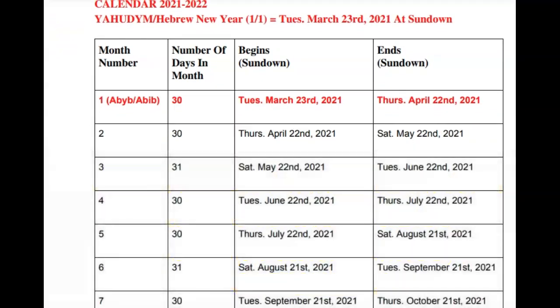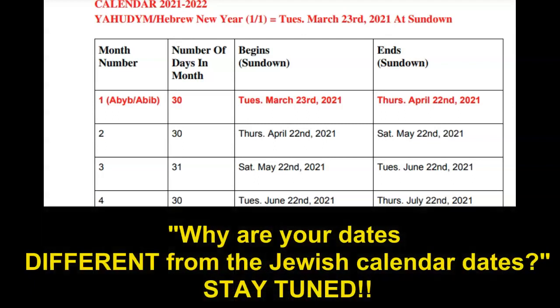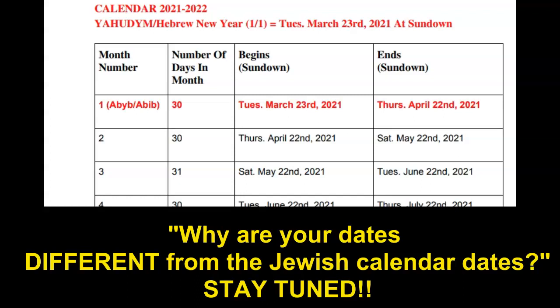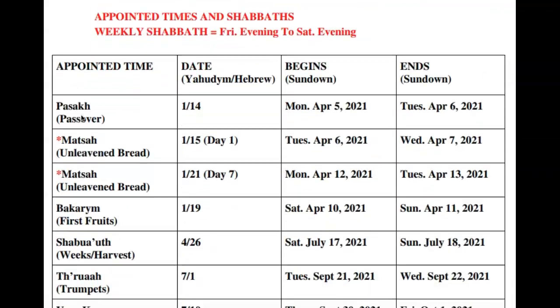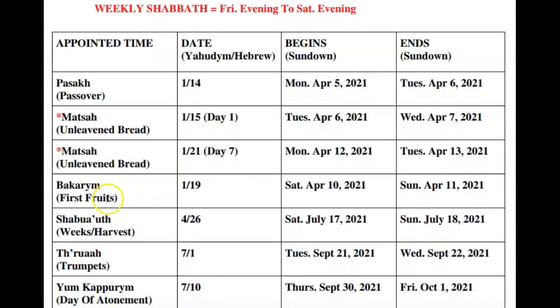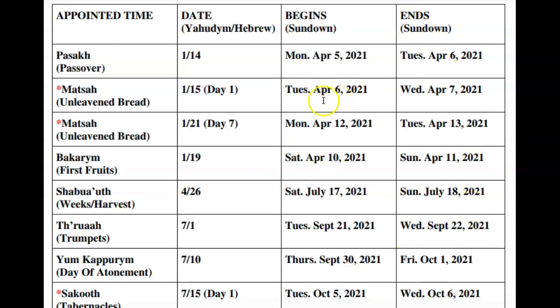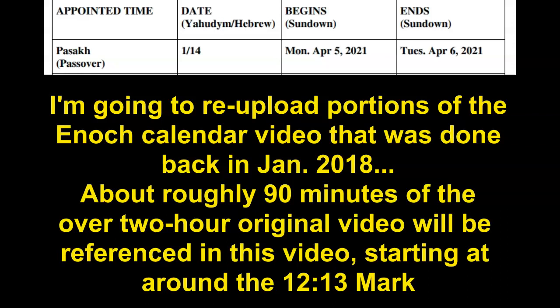A question I commonly get is: why are your dates different than the Jewish calendar? The Jewish calendar observes appointed times on different dates. For those of you who are new or wondering why I observe the calendar according to the Enoch calendar and why I arrive at these dates for Passover, Unleavened Bread, Firstfruits, and so on — what I'm going to do is copy and paste the Enoch calendar video from 2018 into this video so you have a better understanding.